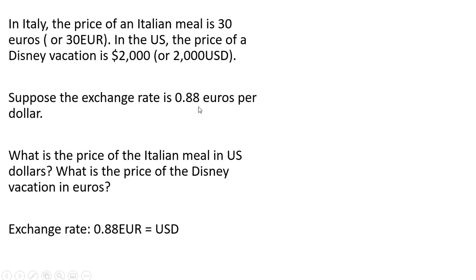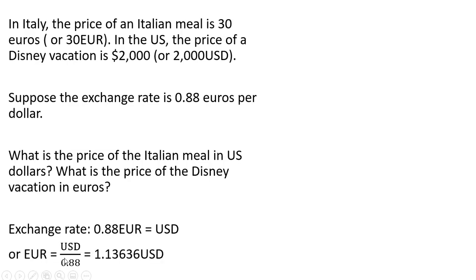Given our exchange rate information, we can write this simple formula: 0.88 euros equals 1 US dollar. We can also take this equation and divide through by 0.88. So 1 divided by 0.88 is 1.136. In other words, 1 euro will get you back 1 dollar and roughly 14 cents.